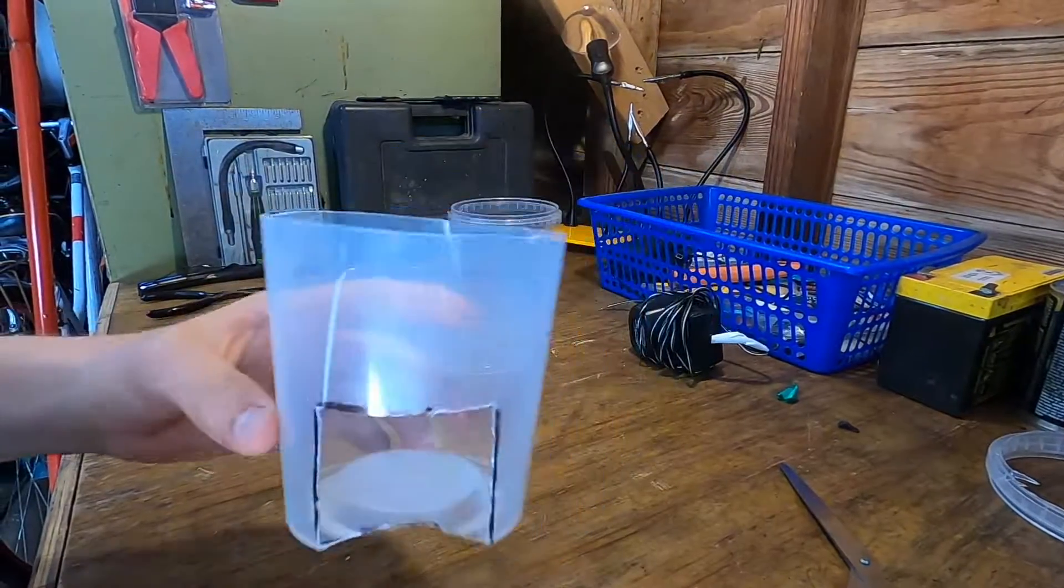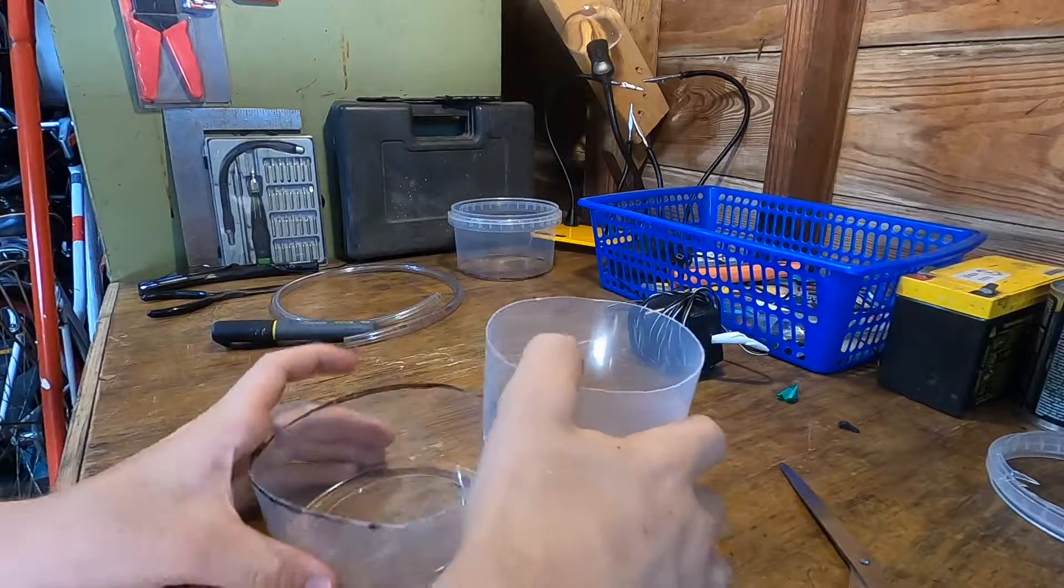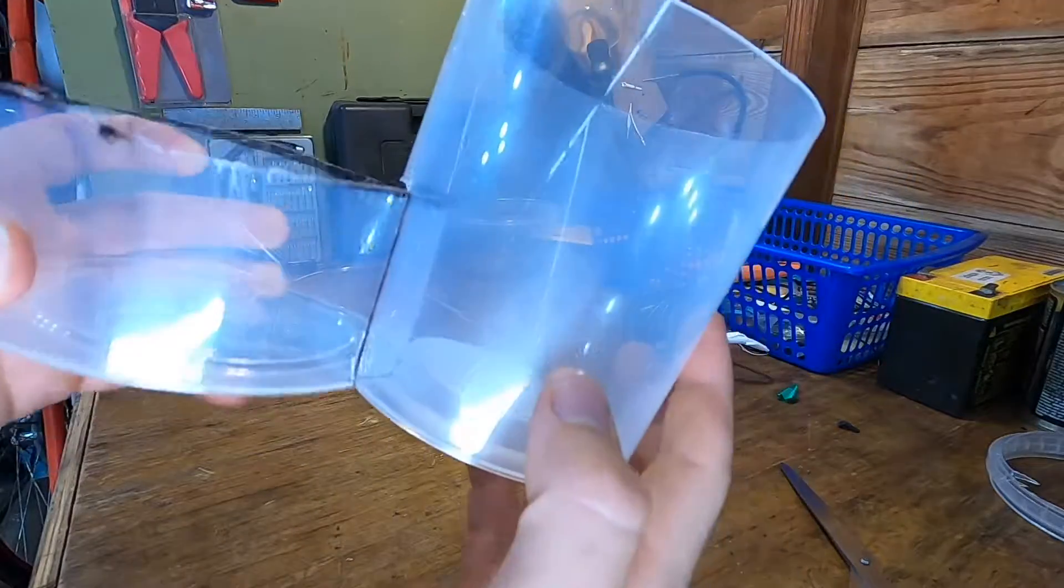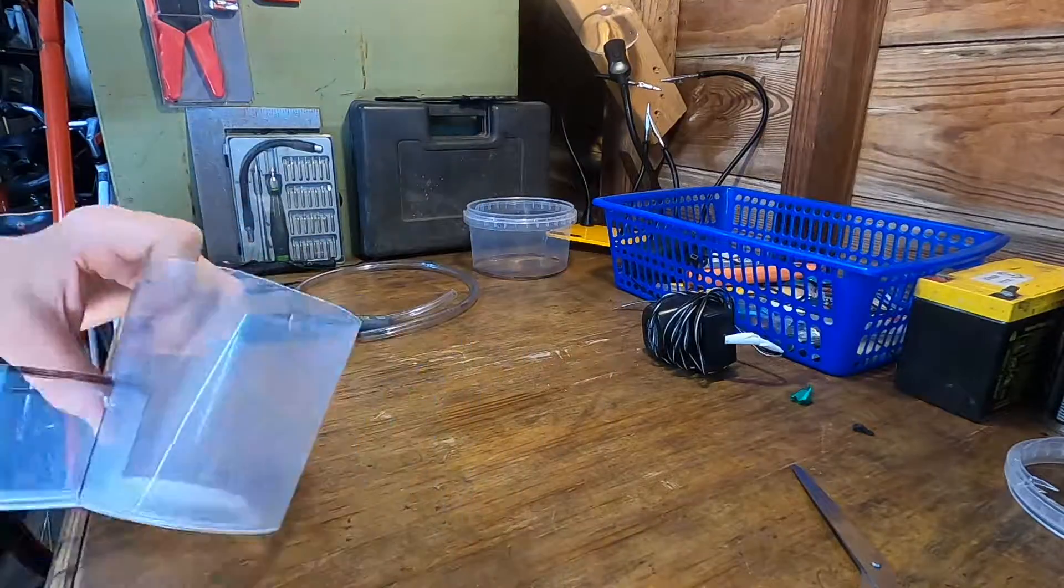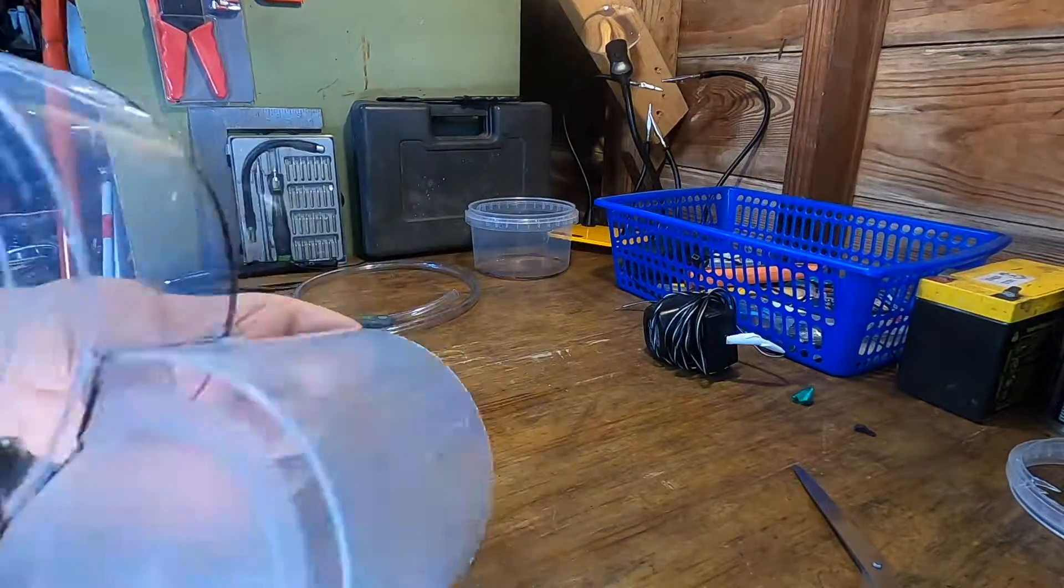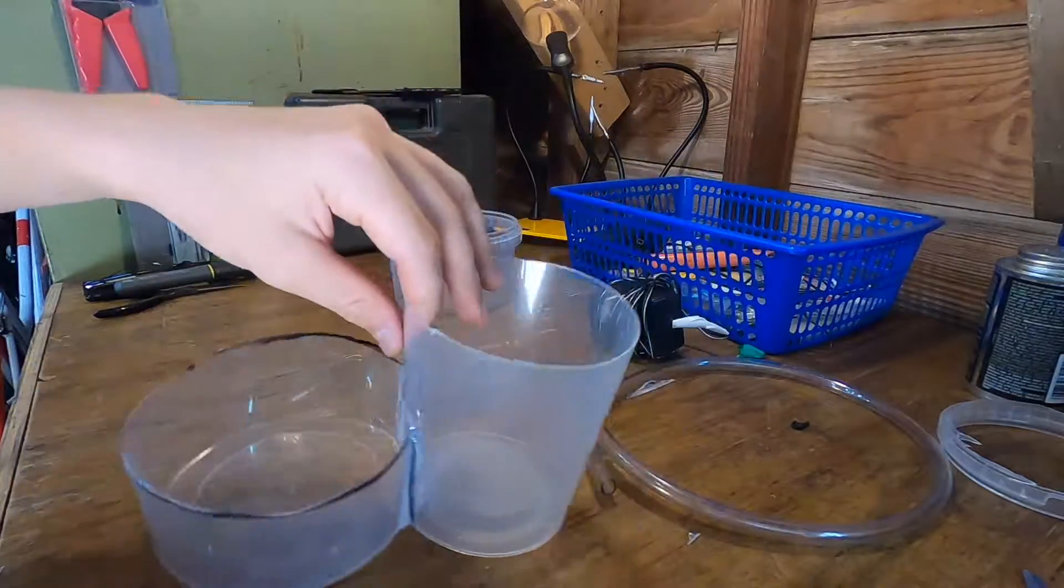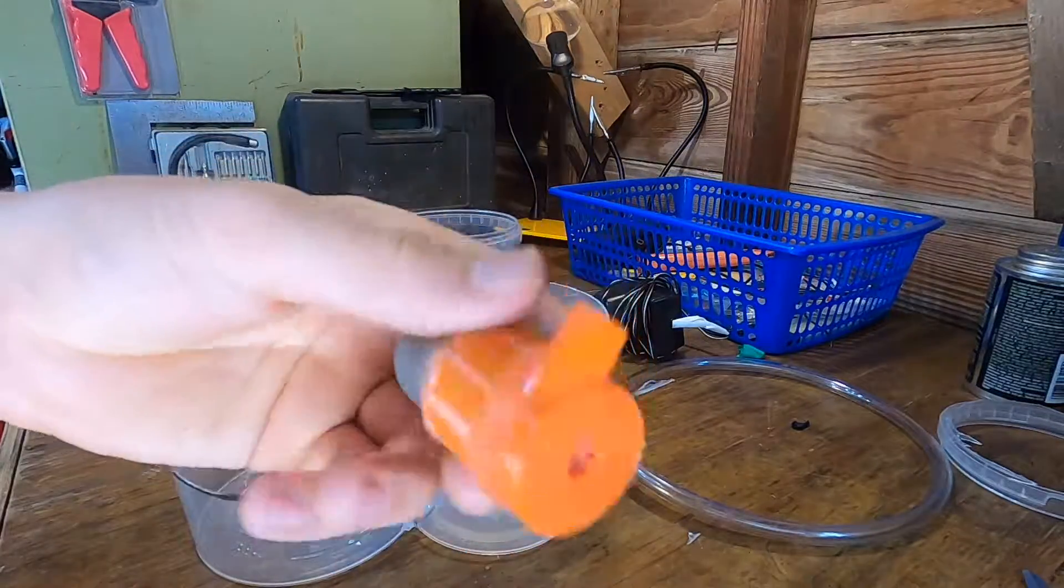Alright so we got the part here cut out. So now we can glue this onto the back of here. Alright so we got the two containers hot glued together. We got the pump all together.